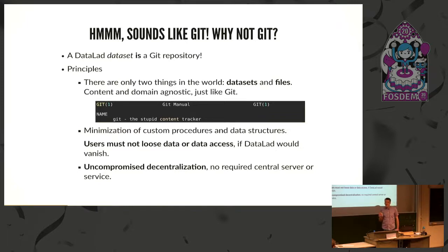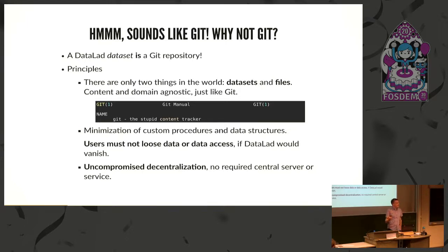There are a few principles we follow in developing DataLad. For example, DataLad only recognizes two entities: files and datasets, which are collections of files. We try to minimize custom procedures. If git provides a feature to implement a solution, we use that — with the aim that if DataLad as an academic project happens to die, its users won't unnecessarily suffer.